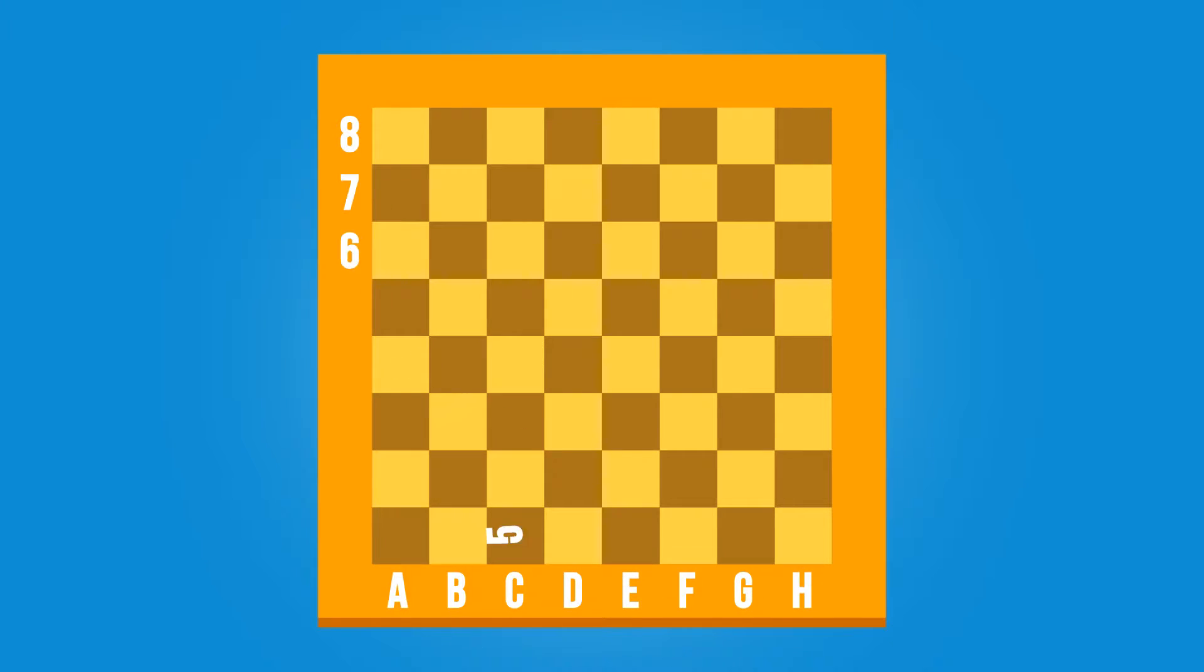As you can see, we've placed letters and numbers along the sides of the board, or field. These allow us to identify any square on it.